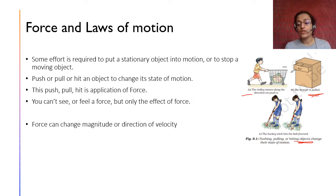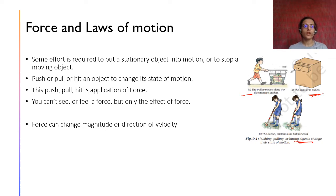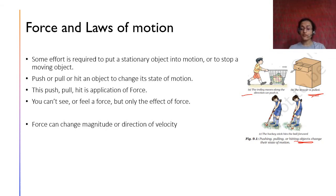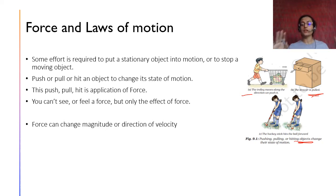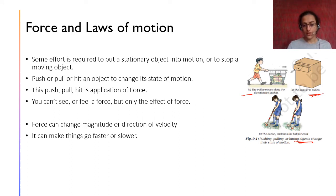Force can change the magnitude or direction of velocity. A simple example of changing direction is in cricket, table tennis, or tennis — the ball is hit at you and you hit it back, changing its direction of velocity. Sometimes you put extra effort and increase the speed as well. If the ball is coming at a slower pace, you hit it back at a higher pace. Force can make things go slower or faster — it changes the magnitude of velocity.